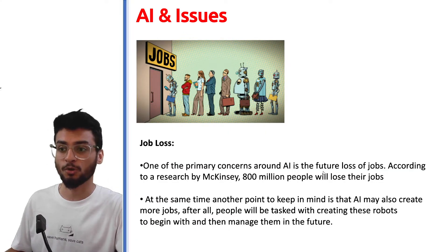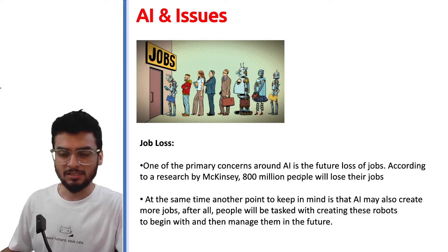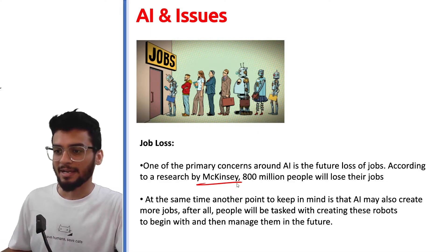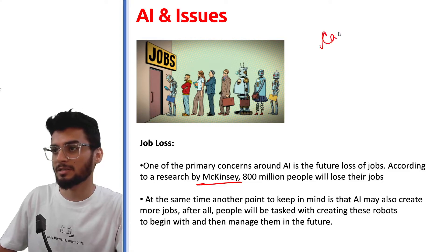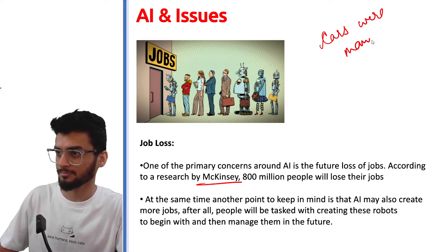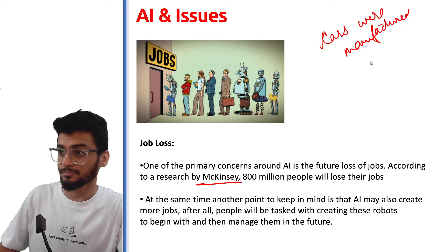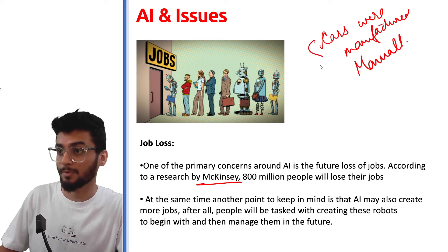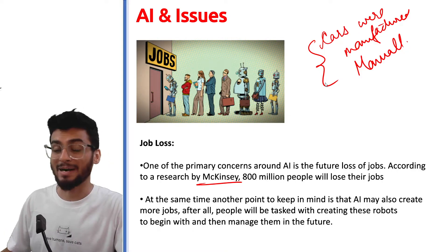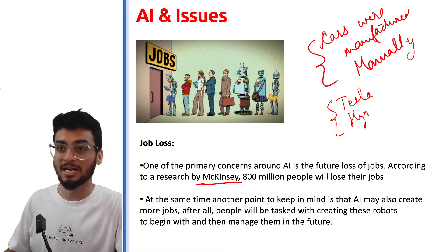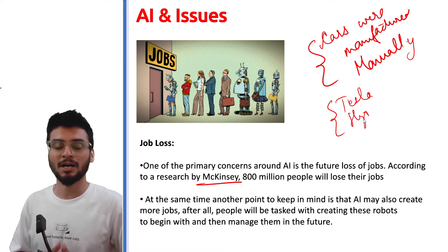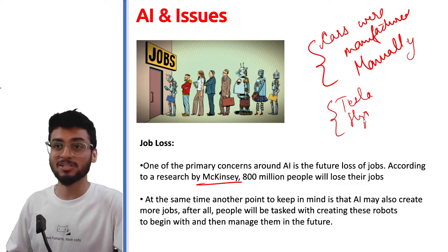There is another issue of job loss. According to research conducted by McKinsey, 800 million people will lose their jobs because AI is taking over their roles. For example, earlier cars were manufactured manually by hands — like old Maruti cars and Ambassador cars. But right now, companies like Tesla and Hyundai have AI-enabled machines where cars are automatically created, and people are not getting those employment opportunities. So AI is also creating an issue with jobs.